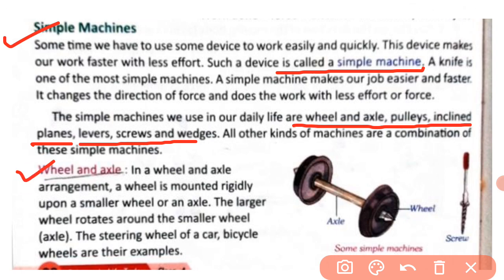First we will discuss the simple machine that is wheel and axle. In a wheel and axle arrangement, there is a smaller wheel called the axle, which is like a rod, and a larger wheel. The larger wheel rotates around the smaller wheel or axle. The steering wheel of a car and bicycle wheels are examples of wheel and axle.